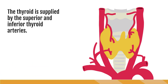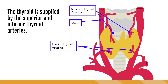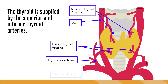The thyroid is supplied by the superior and inferior thyroid arteries. The superior part of the thyroid is supplied with oxygen-rich blood from the right and left superior thyroid arteries. These arteries are the first branches of the right and left external carotid arteries, or the ECAs. The bottom half of the thyroid is supplied by the right and left inferior thyroid arteries, which are branches of the thyrocervical trunks that branch from the subclavian arteries.